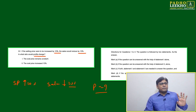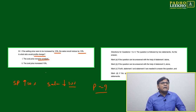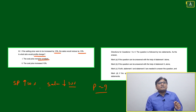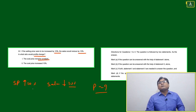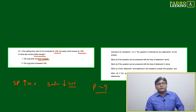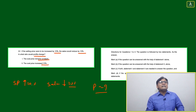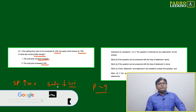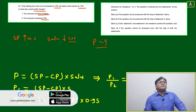Now we read Statement 1: the cost price remains constant. If cost price remains constant, can we calculate the percentage change in profit? Statement 2: the cost price increased by 10 percent. We need to check Statement 1 first.